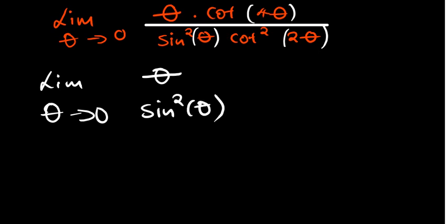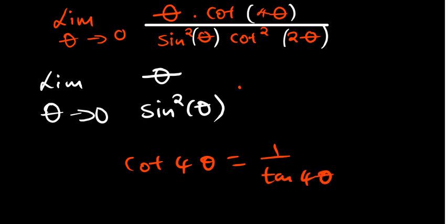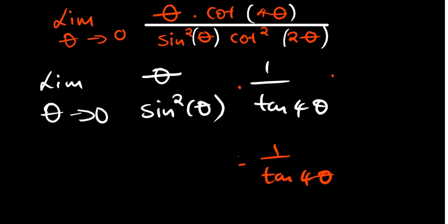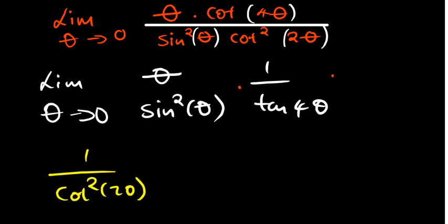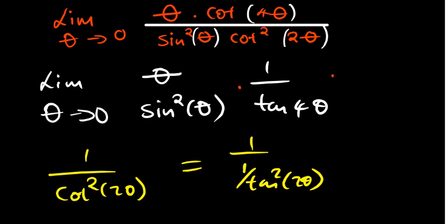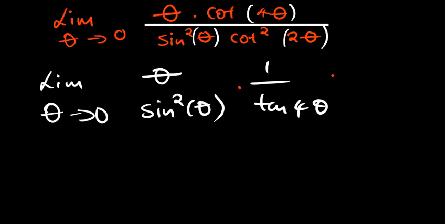Now we have that being multiplied by cot 4 theta, which is the same as 1 over tan 4 theta. So I'm going to substitute that, giving us 1 over tan 4 theta, multiplied by cot squared 2 theta on the bottom. Since cot is the same as 1 over tan, the reciprocal of 1 over tan squared 2 theta is tan squared 2 theta. So we have tan squared 2 theta on the numerator.